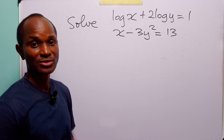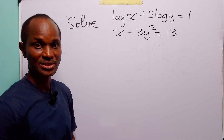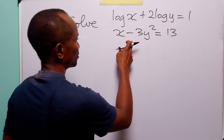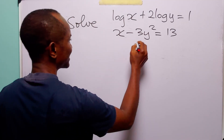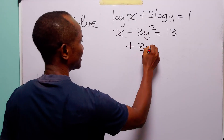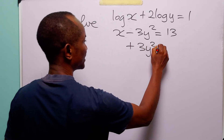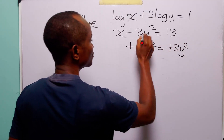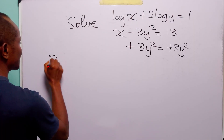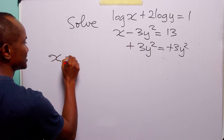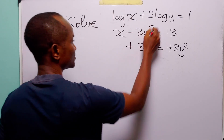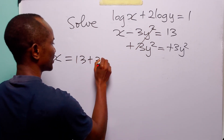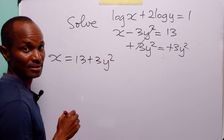To solve this problem, we are going to start with a substitution. From the second equation, you will see that if we add 3y squared to both sides of the equation, we have that x is equal to 13 plus 3y squared.